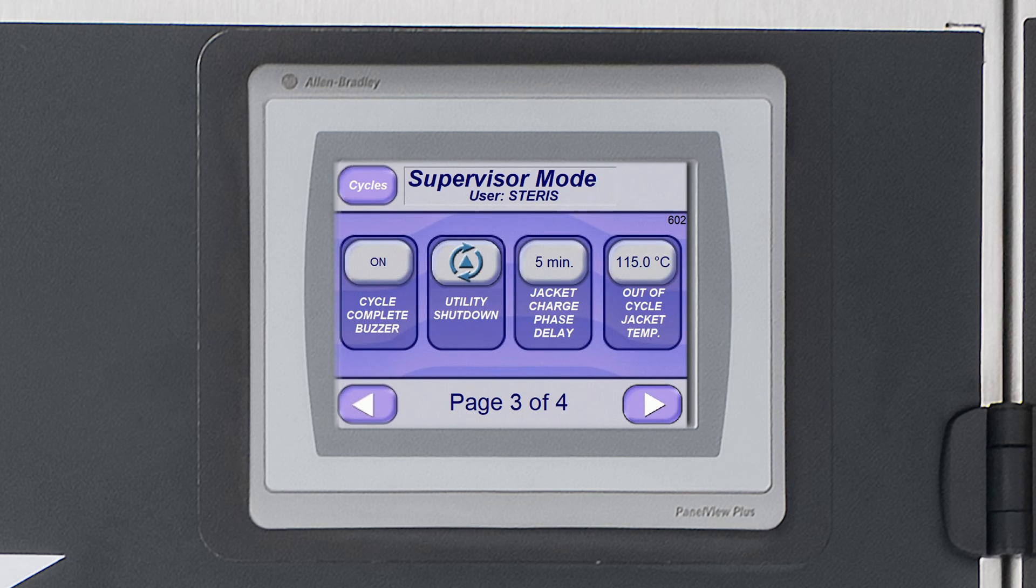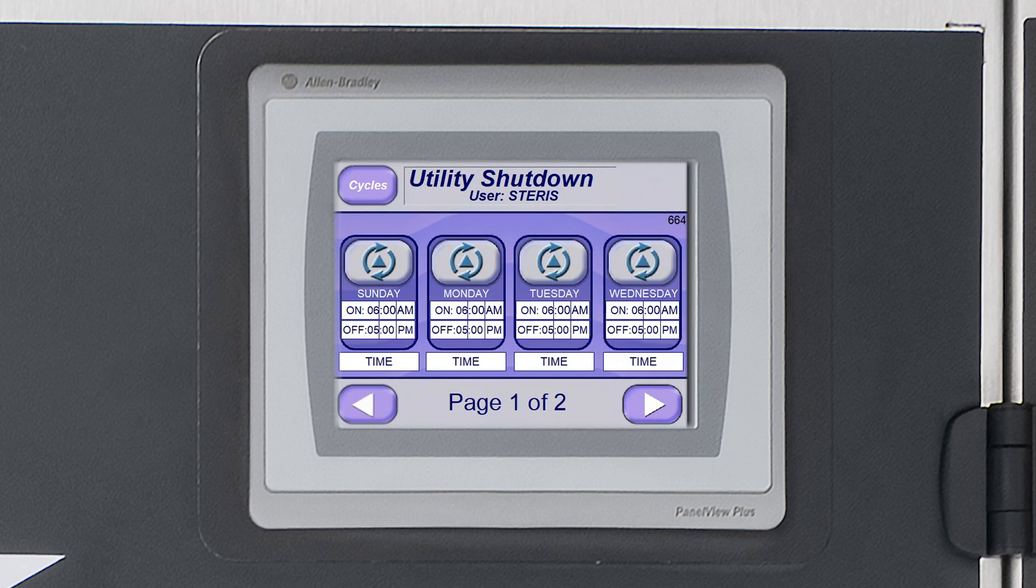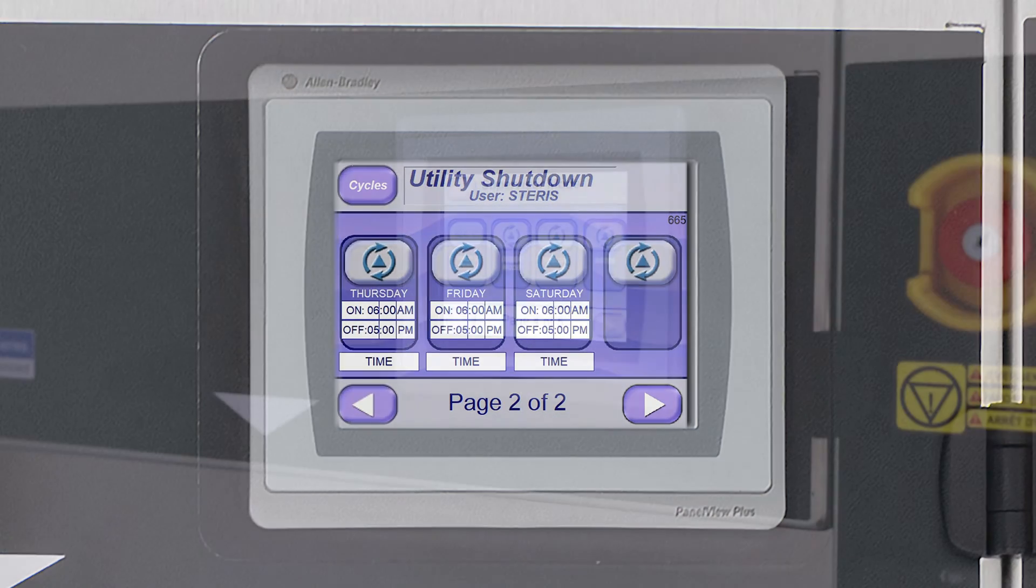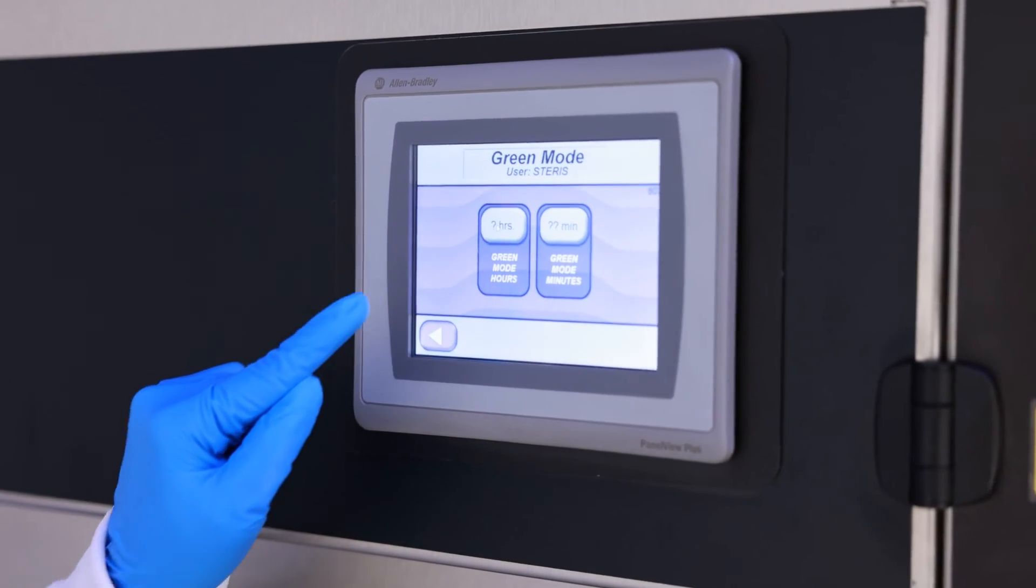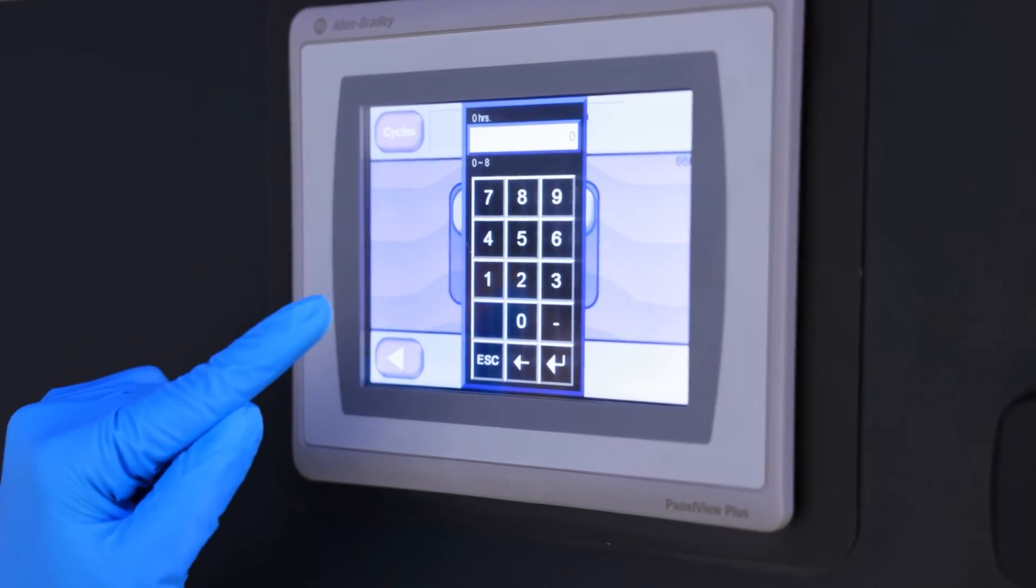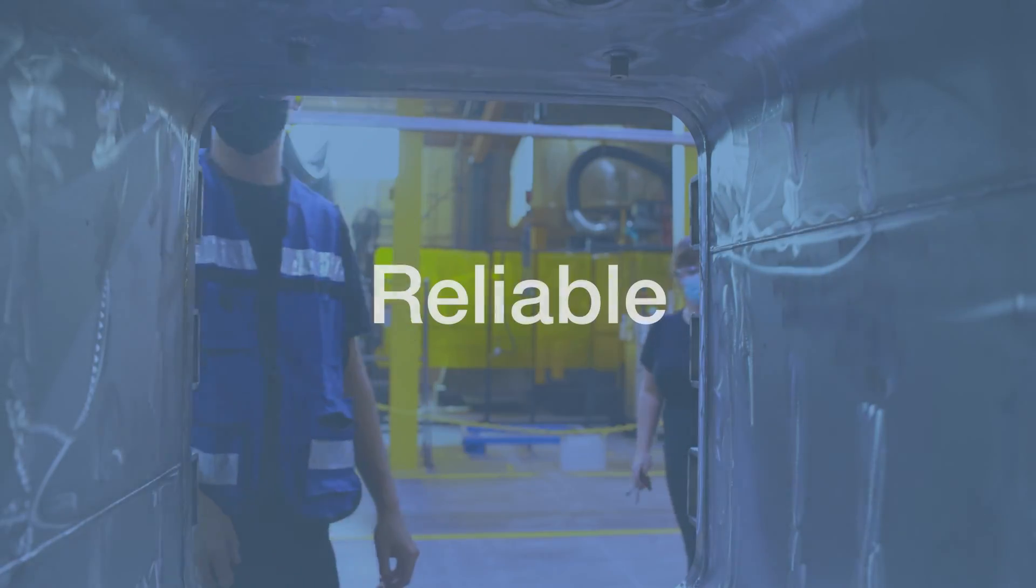The AMSCO 600LS can be programmed to automatically start up each morning and shut down each night. The sterilizer also has a green mode that allows you to program automatic jacket and generator shutdown during slow times of the day, saving additional energy and water.